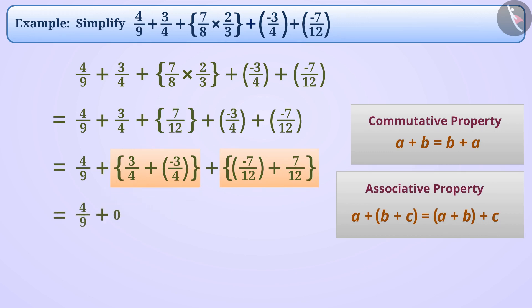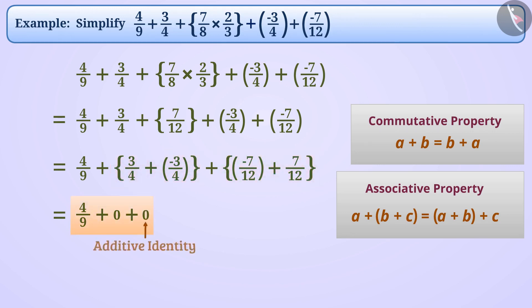Since 0 is the additive identity, if 0 is added to 4/9, then the answer is 4/9 only.